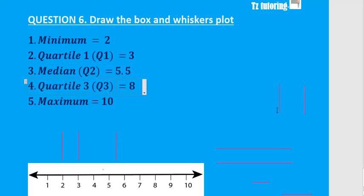And then Q3 is 8, so we draw a vertical line at 8. So there's a vertical line at 8.